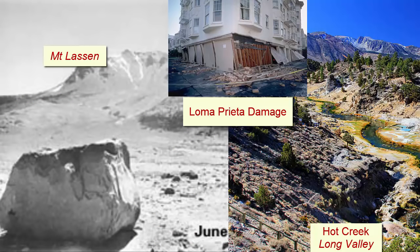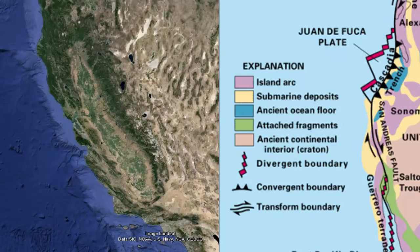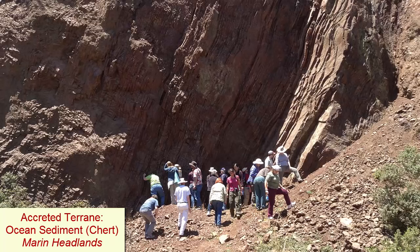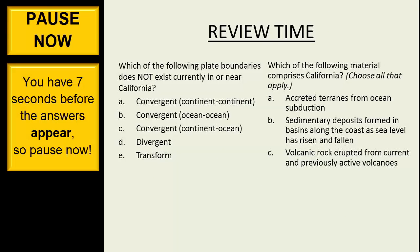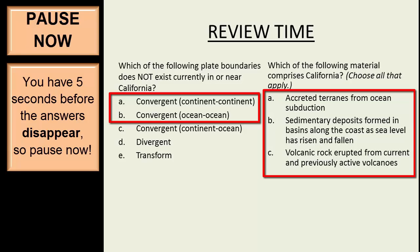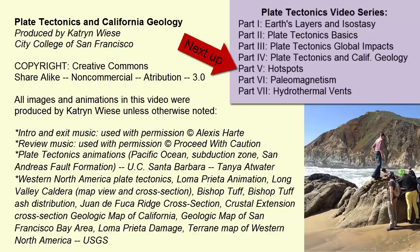As you can see, plate tectonics has had a huge impact on the past and present landscape of California. It produces many of our major geologic hazards, and it has rafted in and combined the very land masses that now make up our state. For more information and more detail, continue on to the next video in this series.